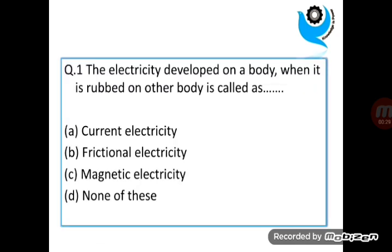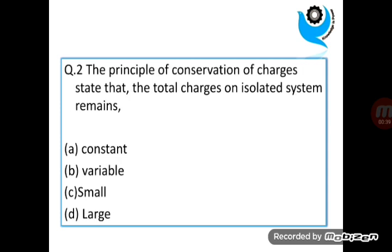Question 1. Electricity developed on a body when it is rubbed on other body is called as. Question 2. The principle of conservation of charges state that the total charges on isolated system remains. Answer is a. Constant.